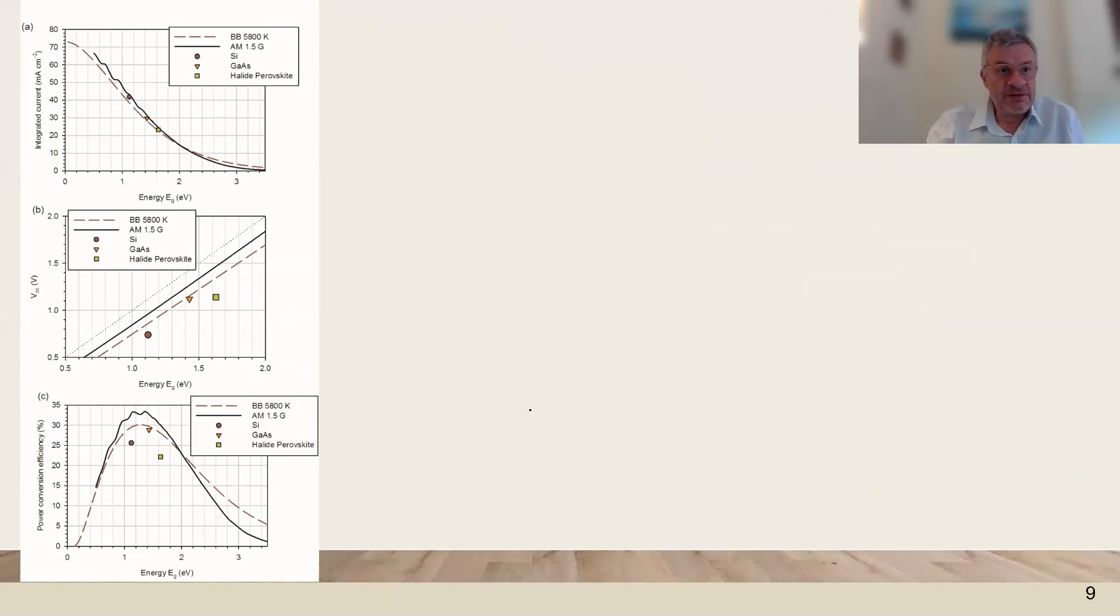Based on the Shockley-Queisser method, we can then obtain optimal current, optimal voltage, and optimal efficiency, using either the black body radiation to simulate the sun or the AM 1.5 spectrum, which is the solar spectrum. And we obtain these graphs about the ideal photocurrent, the ideal photo voltage, and finally the total efficiency that is possible.